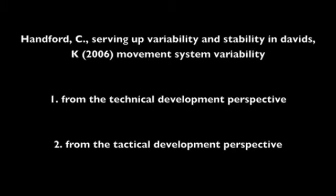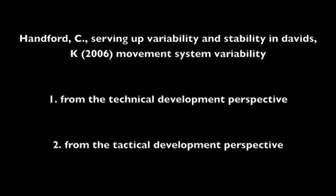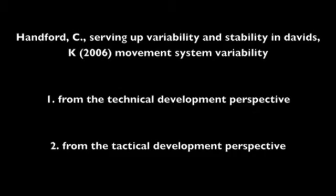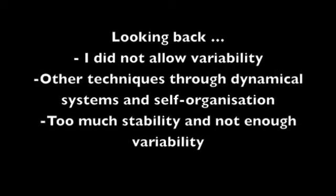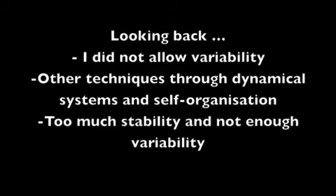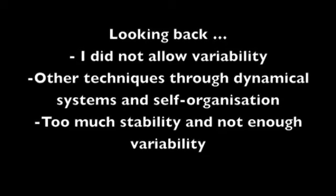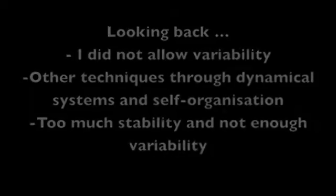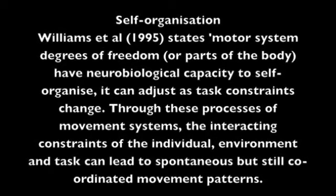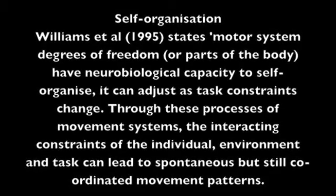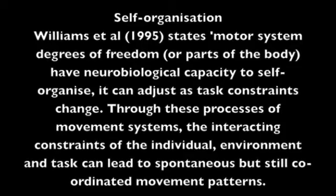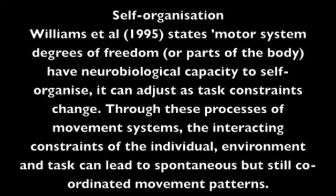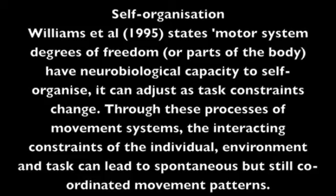Hanford's concerns were more focused on the first perspective when he suggested that, despite the stability needed to produce a specific movement pattern, some elements should be left free to vary in order to satisfy immediate task demands. In this constraint, I did not allow variability from the performers. In a match situation, the players may not need to use a V-drag and can use other techniques through dynamical systems and self-organisation. I may have been trying to give them too much stability and not enough variability. Williams et al. 1995 states motor system degrees of freedom have neurobiological capacity to self-organise and can adjust as task constraints change. Through these inherent processes of movement systems, the interacting constraints of the individual, environment and task can lead to spontaneous but still coordinated formation of movement patterns.